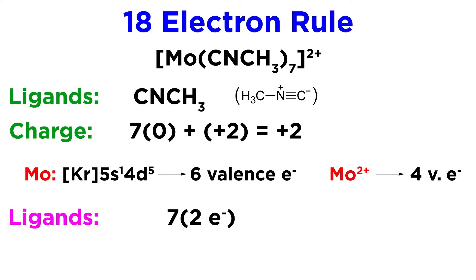Each of these ligands contributes two, and there are seven of them, so that's fourteen, plus the four from the metal is eighteen electrons total, so this complex should be stable.